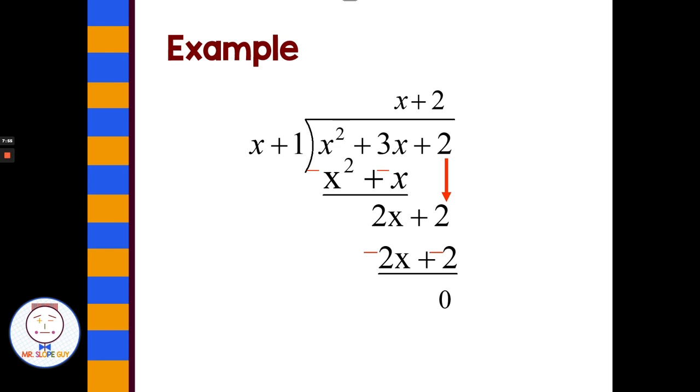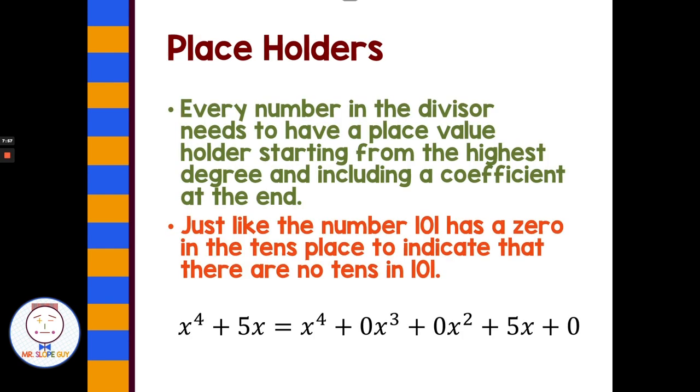So let's talk about place value. Every number in the divisor needs to have a place value holder starting at the highest degree and including a coefficient. Just like when we have 101 has a 0 in the tens place to indicate that there are no tens, we can't just write 1, 1. It would look like 11. We have to have a 0 for the placeholder. However, if I have x to the 4th plus 5x, I'm going to need to have an x term to the third power and an x term to the second power.